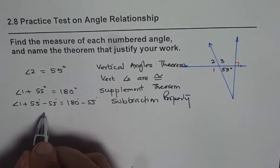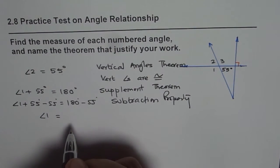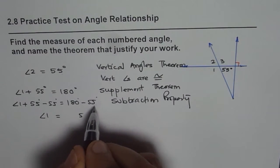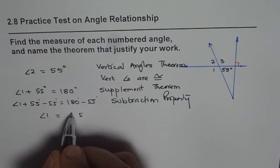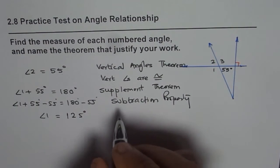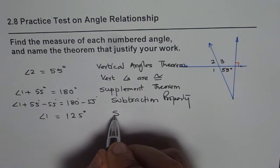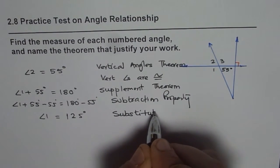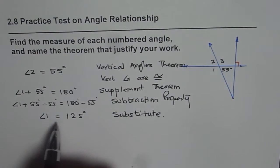And that gives you angle 1 is equal to—10 take away 5 is 5, and then 7 take away 5 is 2—125 degrees. And that is what we can substitute after simplification. So we get angle 1 equals 125 degrees.